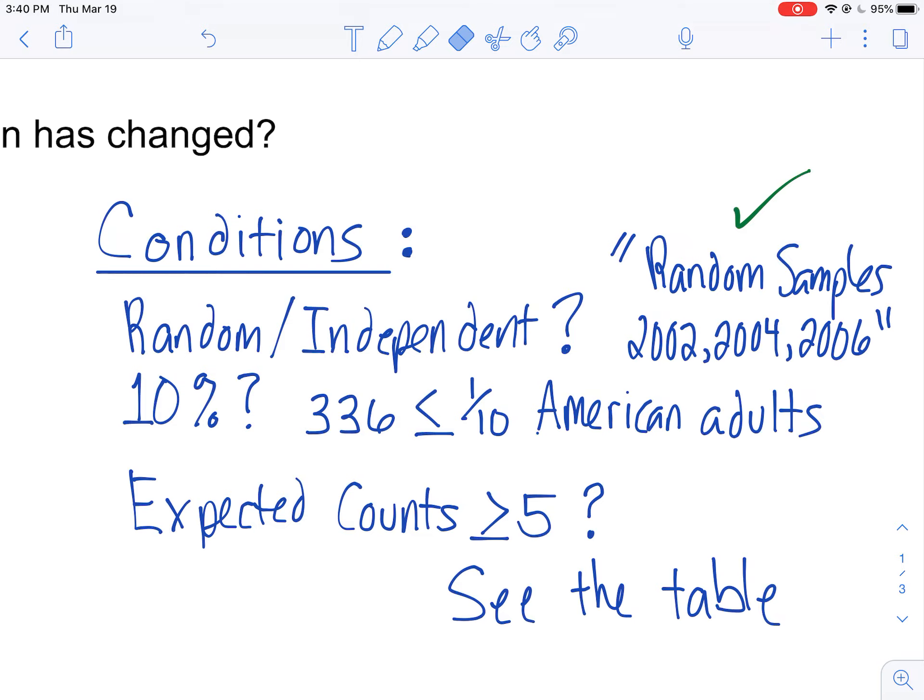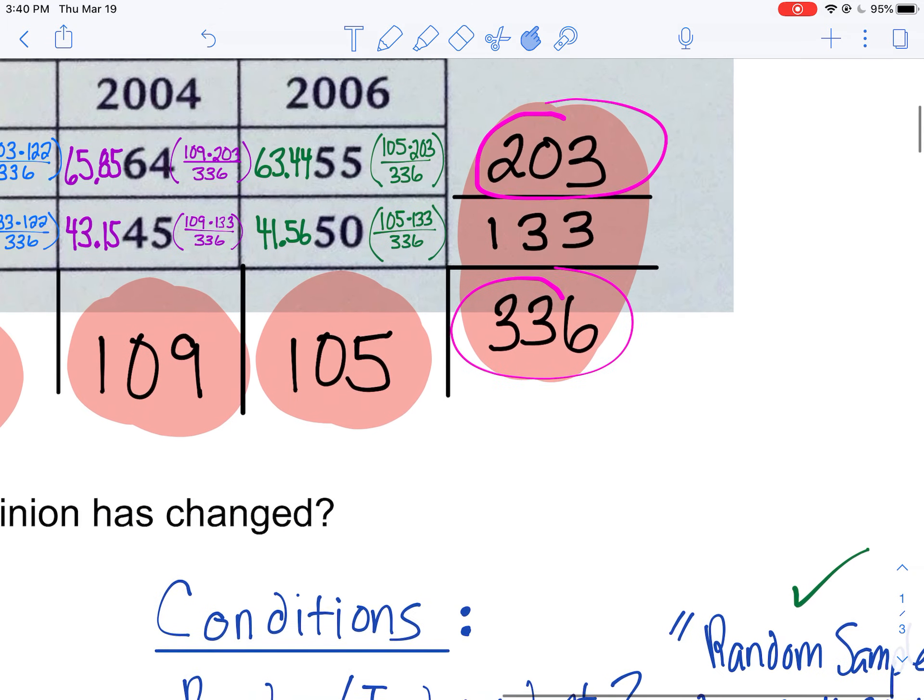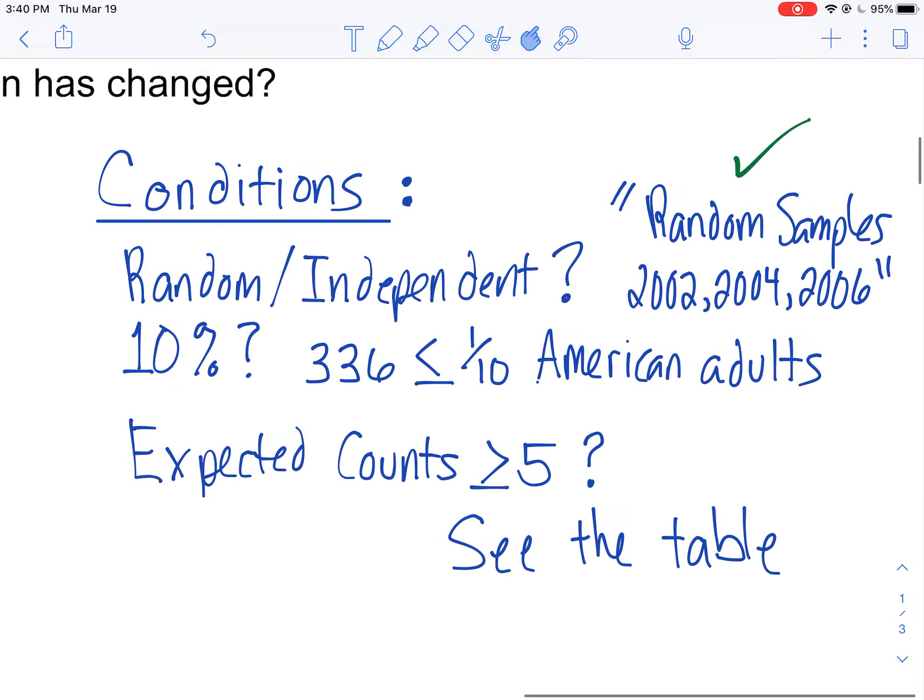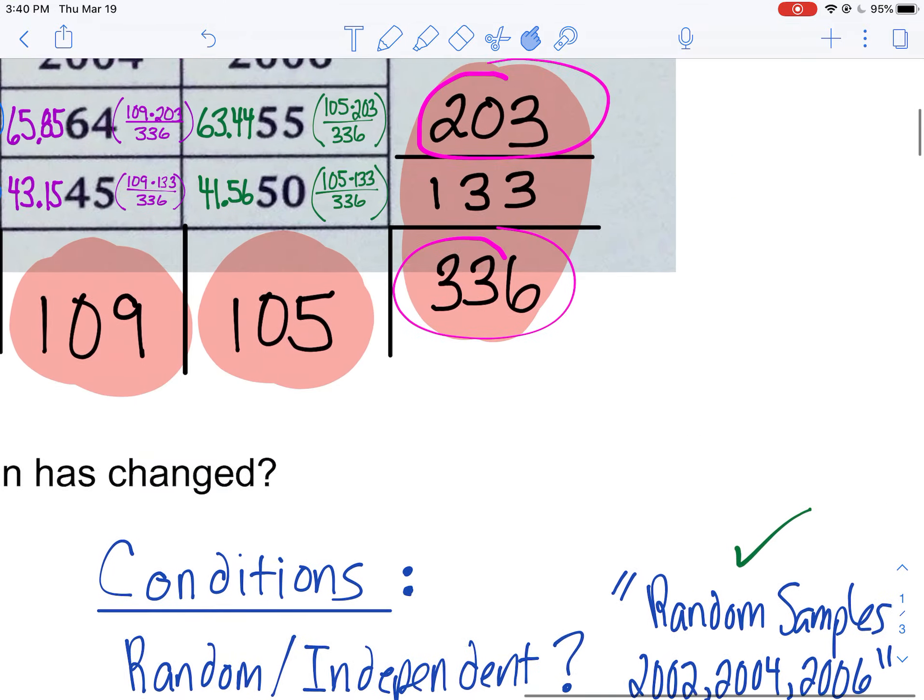10% condition: 336, which is my total here, is less than 10% of all American adults. So check. Next, my expected counts. You'll notice I put 'see the table.' I did all the hard work for you already. I did all my expected counts here.